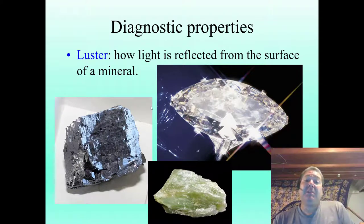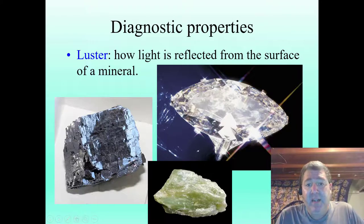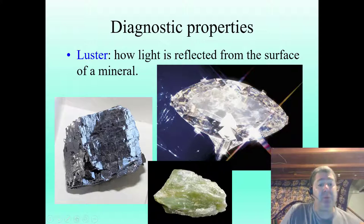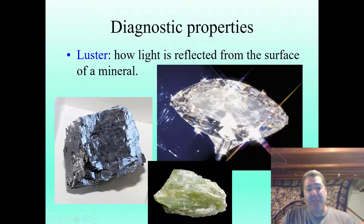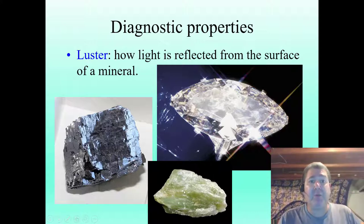Luster is how light is reflected from the surface of a mineral. So we're going to look at something having a vitreous or glassy luster. This is a metallic luster — really looks like a metal, like you could conduct electricity through it. And then this piece of talc down here, you can see it even kind of looks like it has a greasy kind of feel to it. And indeed it would — that's where we get talcum powder.